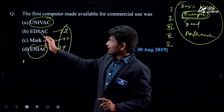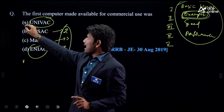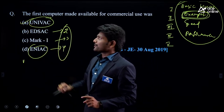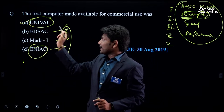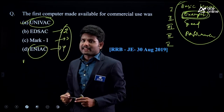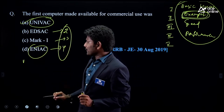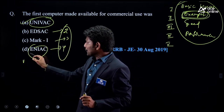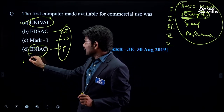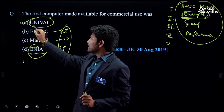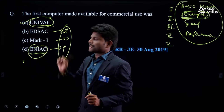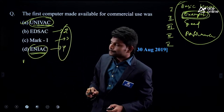For this particular question, the answer is UNIVAC. It is a first generation computer. ENIAC is also a first generation computer, but compared to ENIAC, UNIVAC was invented first and made available for commercial use.